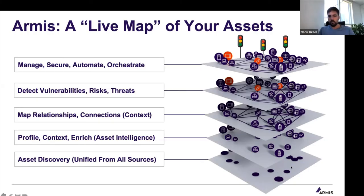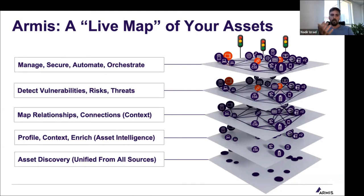It starts from the discovery of every single asset — and when we say every single asset, we literally mean no boundaries on that whatsoever. It can be anything from the on-prem network environment and all the different devices you have on there, referring to endpoints like laptops, all the way through data centers, virtualization, applications, and cloud workloads. Everything and anything within the environment is part of that asset map.